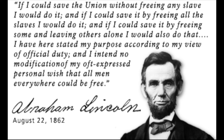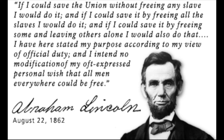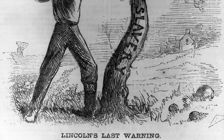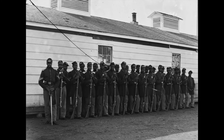It did, however, make the war about slavery for the North, and as a result succeeded in its main goal, which was to prevent Britain and France from helping the South. The two European powers had considered assisting the South due to economic interests. However, both had already abolished slavery, and supporting a pro-slavery side over a side appearing to favor ending the practice was not politically feasible for Britain or France. Additionally, the Emancipation Proclamation encouraged slaves to run away to the North and paved the way for them to begin fighting for the Union.